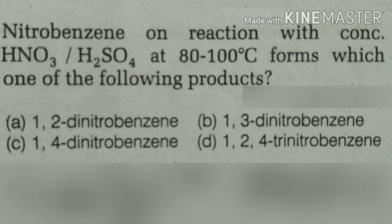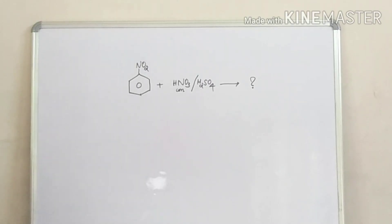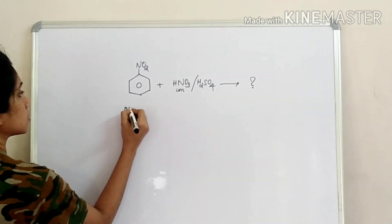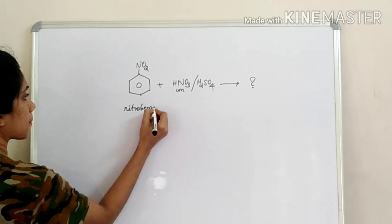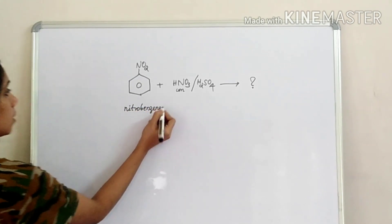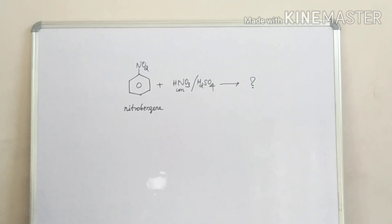Nitrobenzene on reaction with concentrated HNO3 and H2SO4 at 80 to 100 degrees Celsius forms which one of the following products? Nitrobenzene reacts with concentrated nitric acid and sulfuric acid.